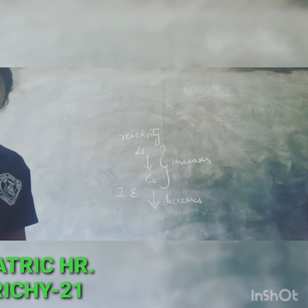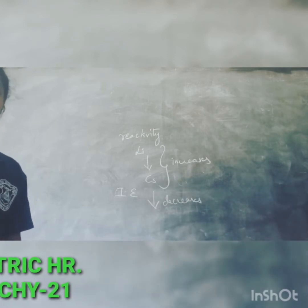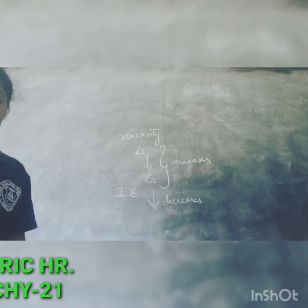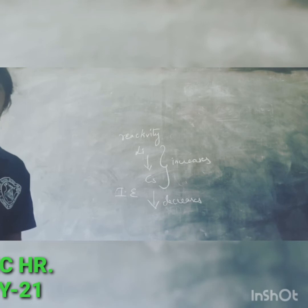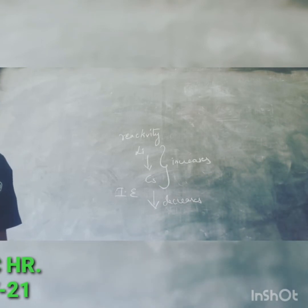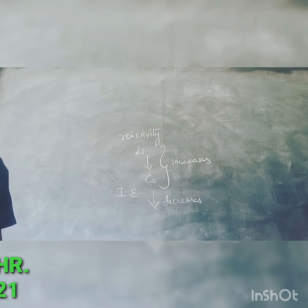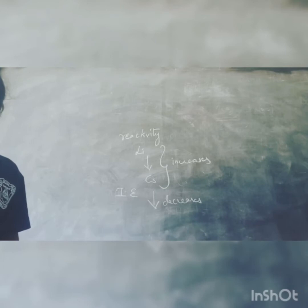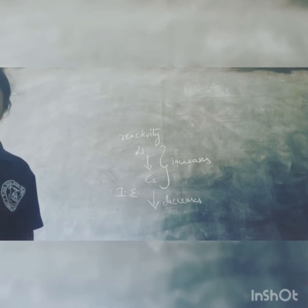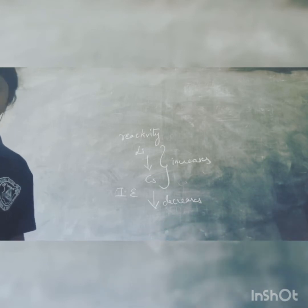First, let us see reaction with oxygen. All alkali metals on exposure to air or oxygen burn vigorously — that is, very fast — forming oxides on the surface. Lithium forms only monoxide. Sodium forms monoxide and peroxide. The other elements form monoxide, peroxide, and superoxide. These oxides are basic in nature.